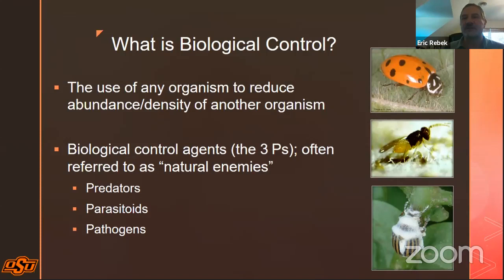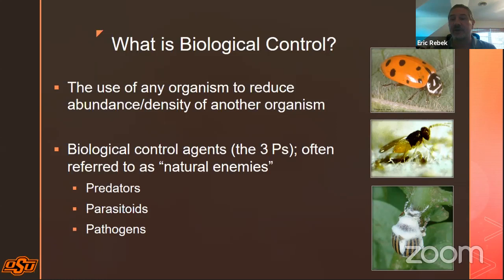Before we launch into the broader topic, I first wanted to provide a definition of biological control. The most succinct definition is: biological control is the use of any organism to reduce the abundance or density of another organism. Density can be thought of as the number of insects per unit area — for example, the number of aphids per leaf, or white grubs per square meter of turf grass on a golf course or home lawn.